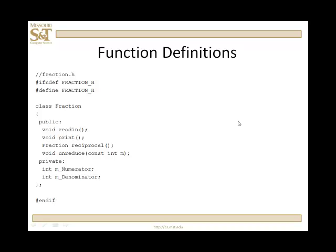So what do we do with the definitions? We're going to create a CPP file — it's called the implementation file for the fraction class. We'll pound include fraction.h so that that file knows the fraction header definition and doesn't have to stumble over what a fraction is. We'll pound include iostream in case we need it, and I'm going to use a scoping technique using standard cout and using standard cin.